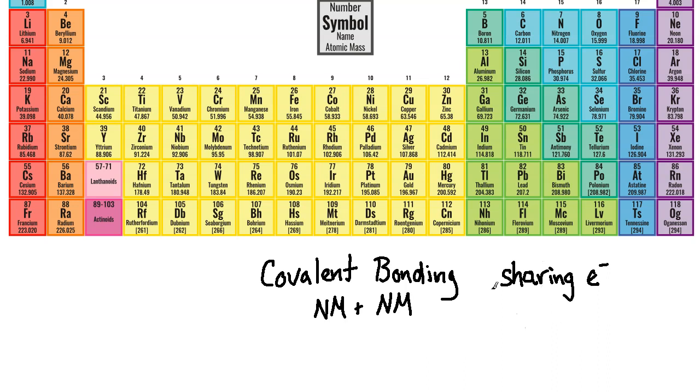Covalent bonding involves two or more non-metals coming together — non-metals bonding with other non-metals — whereas ionic bonding was a metal with a non-metal. The big difference is that covalent bonding involves sharing electrons instead of a transfer of electrons like we see in ionic bonding, where the metal transfers electrons over to the non-metal.